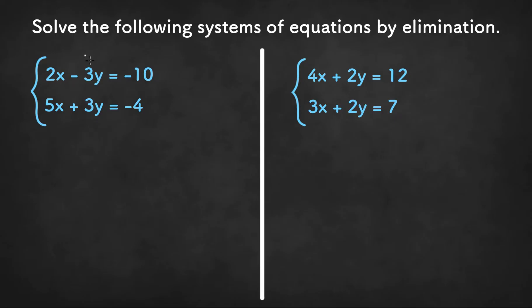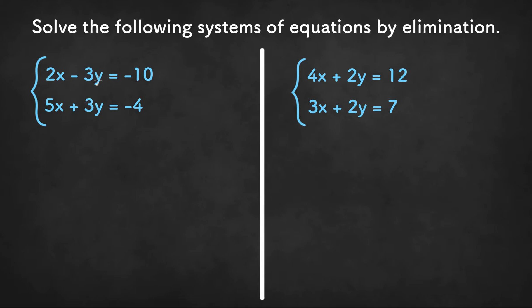Here we are asked to solve the following system of equations by elimination. Elimination allows you to add or subtract the equations in a way that will make one variable drop out. It's easier to use elimination on a system of equations where both equations are in standard form, like the ones here. If the coefficients of one variable are opposites — here we have negative 3y and 3y, which are opposites — then we can add the two equations to eliminate that variable, combining like terms.